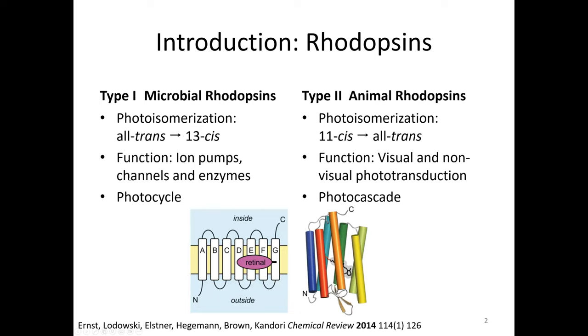Rhodopsins constitute a large family of photoreceptor proteins and they can be categorized in two different types. Type one is microbial rhodopsins. They function as ion pumps, ion channels, and also enzymes and they undergo a photo cycle. This photo cycle is triggered by the isomerization of the chromophore which you can see here, the all-trans retinal. Upon absorption of light it converts to 13-cis, and this starts a cascade of chemical reactions which eventually leads to the desired function.